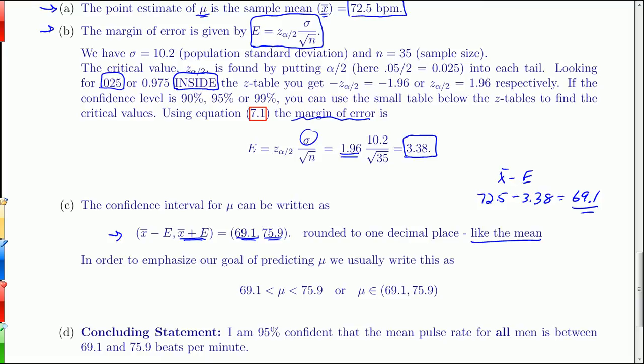Okay, so this is the way we will do it in here. In order to emphasize our goal of predicting mu, I'll write it like this: Mu is between 69.1 and 75.9. Or you could also use the interval notation. I prefer notation with inequalities.